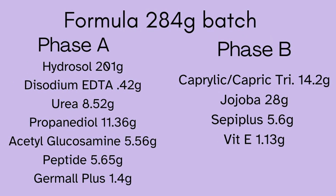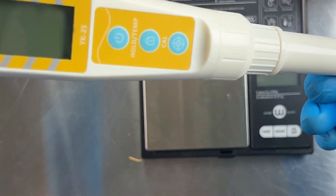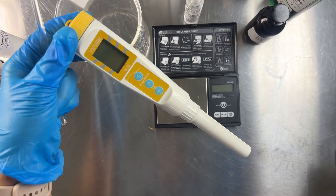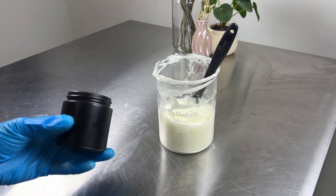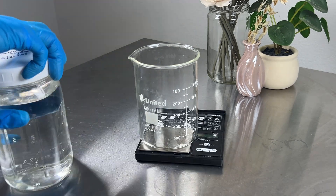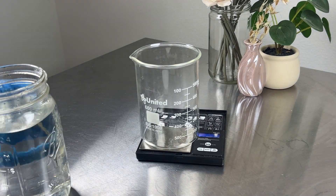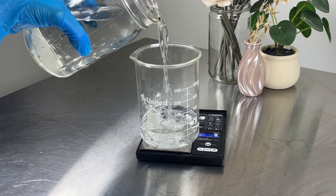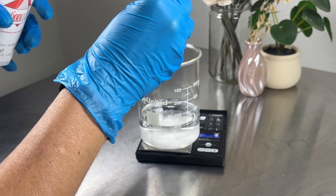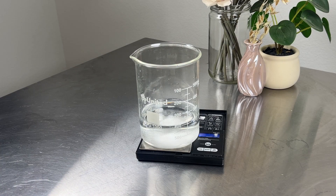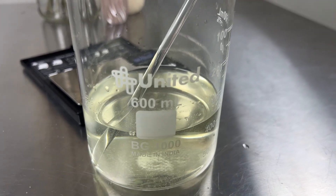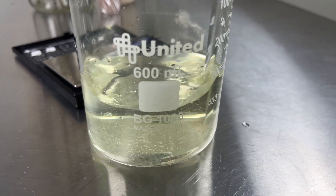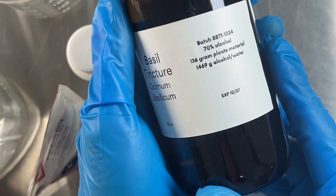Everything you'll need: the ingredients, mixing bowls or glass beakers, an immersion blender, a scale that weighs in 1-gram increments, a pH reader, and jars to store your cream in. We start with Phase A — all of the water-soluble ingredients. I'm using a cucumber hydrosol for some natural scent and soothing properties, then adding the chelating ingredient, propanediol (don't forget to tare your scale each time), urea, and acetylglucosamine. Stir that up well by hand until mostly dissolved, then add your extract — I'm using a basil extract, which has skin-brightening properties as a tyrosinase inhibitor. Lastly, the peptide goes into Phase A.